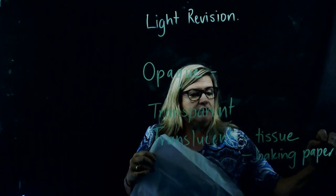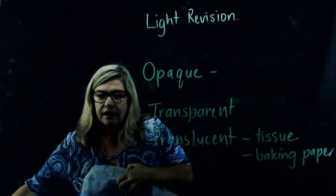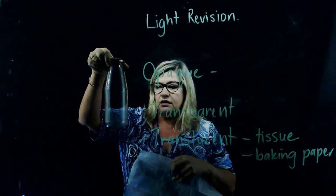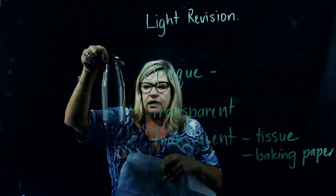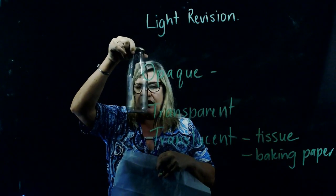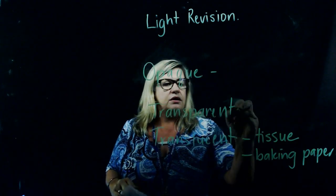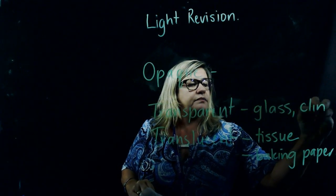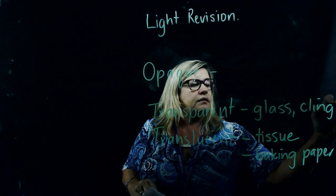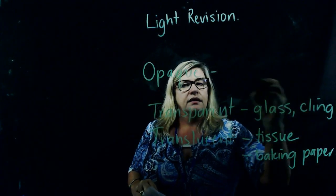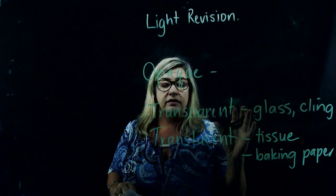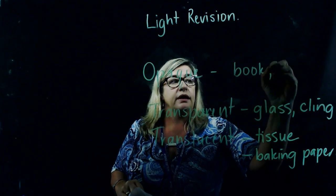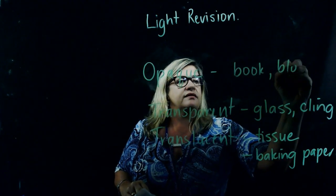Most people would remember that something that is transparent allows light to pass straight through and you can see through it clearly. So transparent would be glass or cling wrap, something like that. Something that is opaque blocks the light totally — so a book, maybe block-out curtains, something like that.